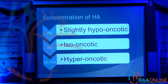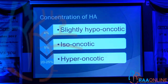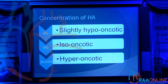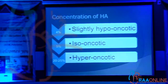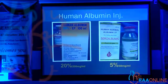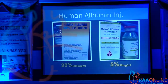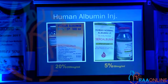This is available basically in two concentrations in India: 20% and 5%, and also available as 25% or 4%. The 4% is nearly iso-osmotic or slightly hypo-osmotic, the 5% is iso-osmotic, and the 20% — which is commonly available in India — is hyper-osmotic. These two preparations are used at JIPMER: 20%, which is 200 mg per ml, and 5%, which is 50 mg per ml.